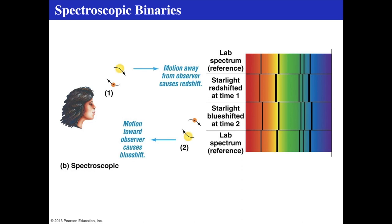In the example we're seeing here, it's actually two stars but only one star can be seen at a time because it's so much brighter than its companion. The companion only shows up as a result of the oscillatory Doppler shift of the primary star. The absorption lines get sent to a laboratory reference, then the starlight is shifted to the red, then to the blue, and back to the red. The brightest star is the only one that can be seen — this is called a single-line spectroscopic binary.